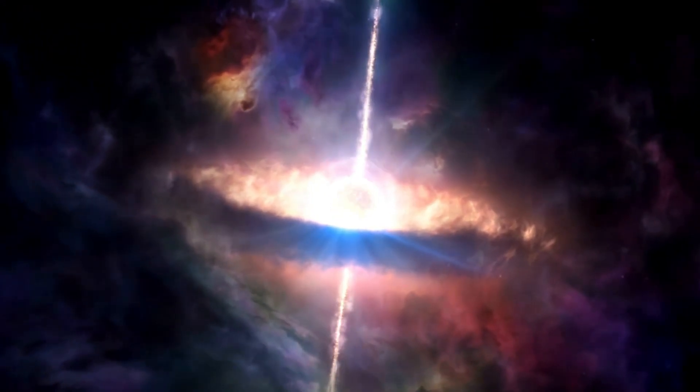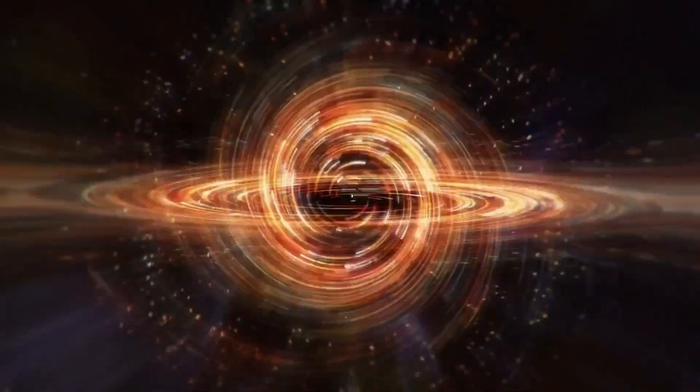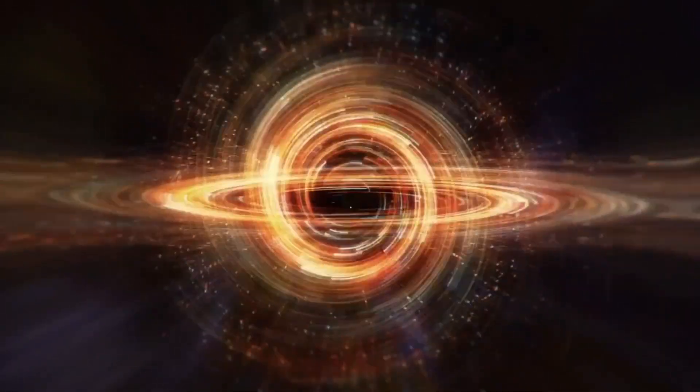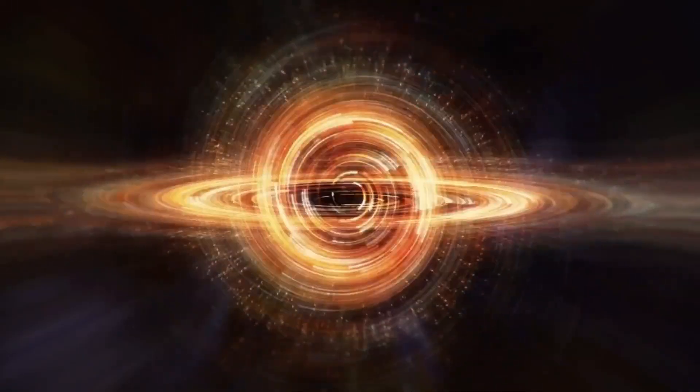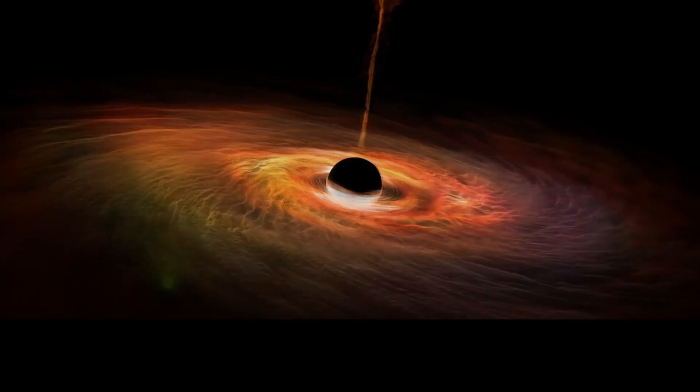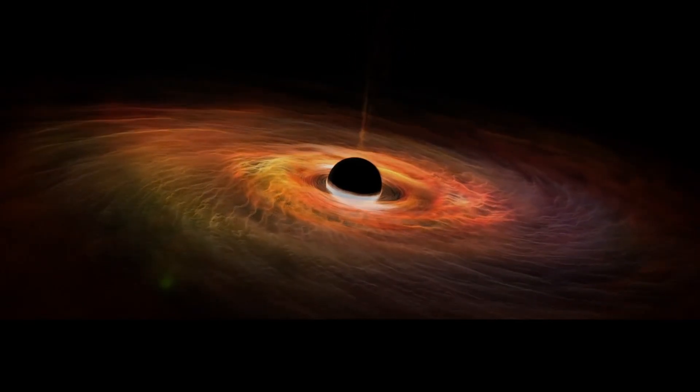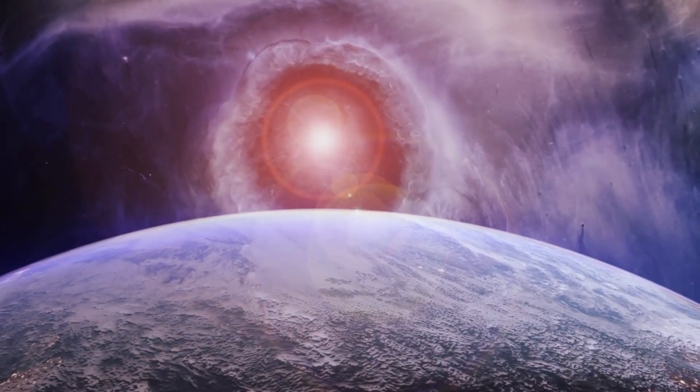The journey into the heart of a black hole begins with a recognition of its immense gravitational pull, a force so strong that not even light can escape its clutches. This gravitational grip, emanating from the region known as the event horizon, marks the boundary between the observable universe and the incomprehensible depths of the black hole's interior.